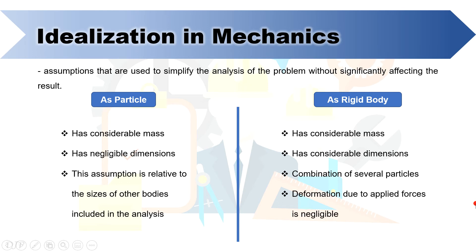The next idealization is rigid body. When we talk about rigid body, we mean a solid or undeformable body having considerable mass as well as dimension. So rigid body is actually a combination of several particles in where the dimension is important to consider during problem solving.